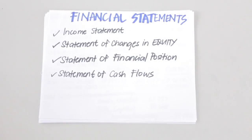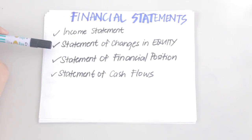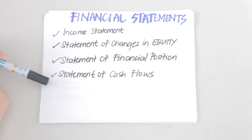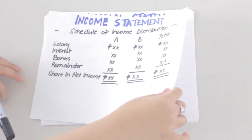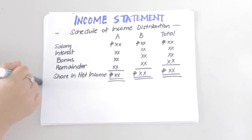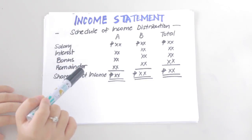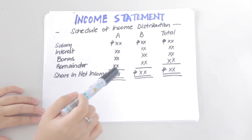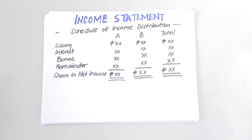The financial statements of a partnership are more or less similar to those of a sole proprietorship, except for a few differences. These can be seen in the income statement, the statement of changes in equity, and the statement of financial position — no changes are seen in the statement of cash flows. The main difference for the income statement is that a new portion is added: the schedule of income distribution, which shows the division of profits and losses among partners. The rest of the income statement remains the same.